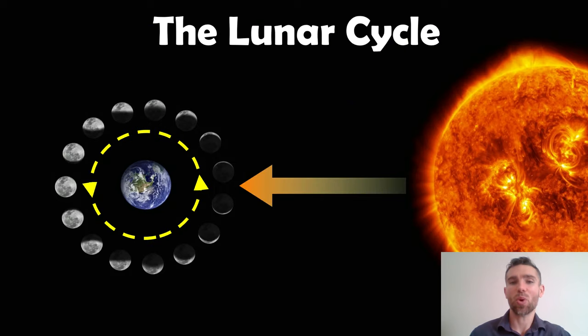Before we do that, we need to actually discuss what the lunar cycle is. So, obviously, the Earth goes around the Sun, the Moon goes around the Earth.